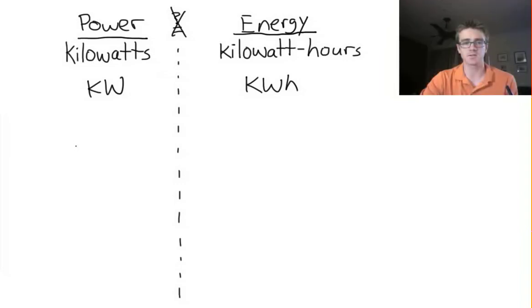Let's look at power first. Most appliances have a power rating. For example, let's say we have a light bulb with a power rating of 100 watts. There's our light bulb, 100 watts.